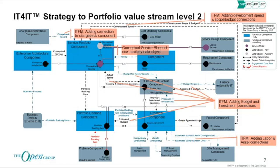Going to each of the four value chains at level two, we'll see a bit more changes. The first is in S2P: the conceptual service blueprint actually still exists as an auxiliary data object. It's not core in end-to-end tracking, but it's still something you want to keep track of — the various versions of a particular conceptual service. The rest of the changes are around data flows happening both in terms of systems-of-record data flows and engagement data flows, added because of work on IT financial management.